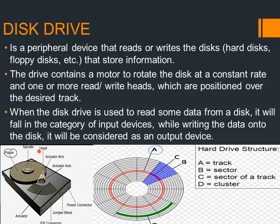Here you see the rotor in the center which rotates the disk, and there are the read and write heads — you can see in the picture, it is labeled also. Now, when the disk drive is used to read some data from the disk it is an input device, and when we write the data onto the disk it is considered as an output device.